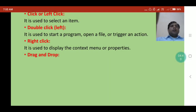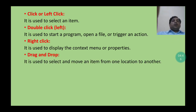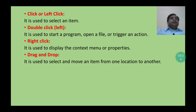The next mouse action is drag and drop. Drag and drop is used to select and move an item from one location to another. Suppose we have to move an item from one place to another — we can use drag and drop. To perform drag and drop, select an item, press left click, then move or drag the mouse and release the left click where you want to place the item.